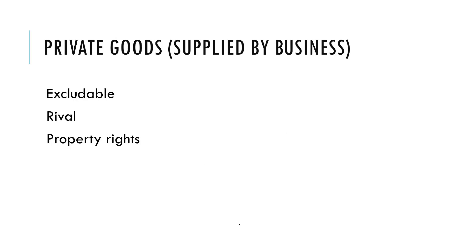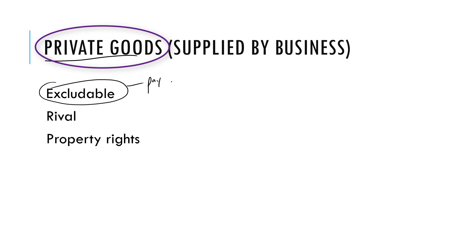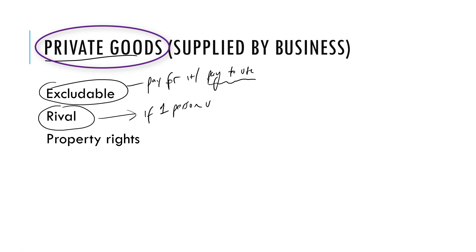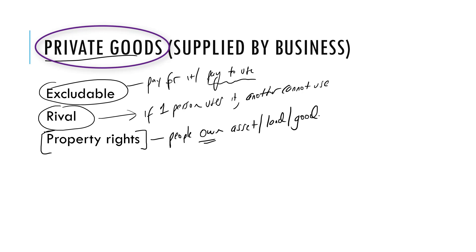So what makes a private good — something that is supplied by business? Well, I have to be able to exclude people. People must pay to use it. The other thing is there has to be a rival element to it. If one person uses something, another person can't use it, so they're going to pay money so that they can use it. Having a rival element helps in terms of allowing businesses to provide it. The other thing is that there are property rights — people own the asset, the piece of land or the good — so if they have property rights, they can exclude others. So a private good must be excludable, consumption must be rival, and there really needs to be some kind of property rights where you can stop people from coming in to use it.